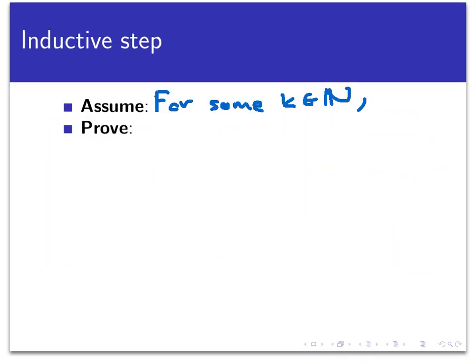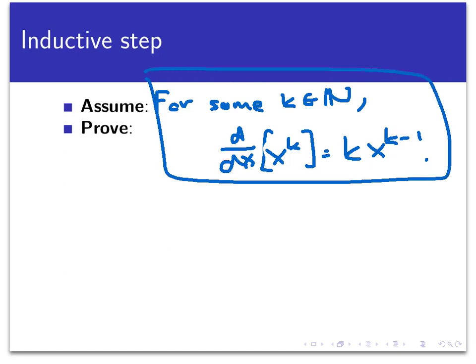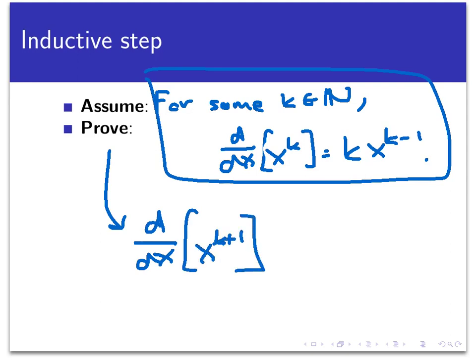The base case is established, so let's move on to the inductive step. The inductive hypothesis is that for some positive integer k, the power rule holds — so the derivative of x^k is k·x^(k−1). This is what we're assuming as we move forward in the proof. Now what are we going to try to prove? We're going to take the predicate and replace k with k + 1.